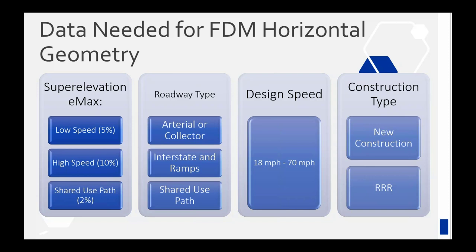You also need to know the roadway type, which basically refers to which chapter of the FDM you're using. Arterials or collectors is chapter 210, interstate and ramps is 211, and shared use paths is chapter 224. You need to know the design speed and whether it's new construction or triple R.